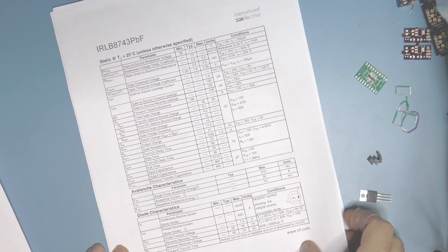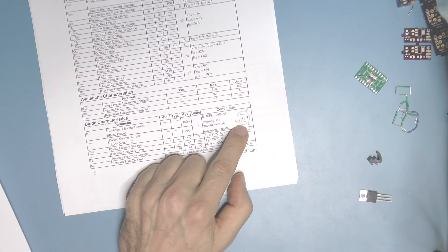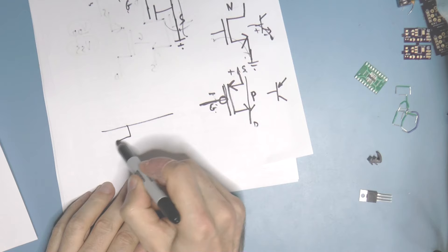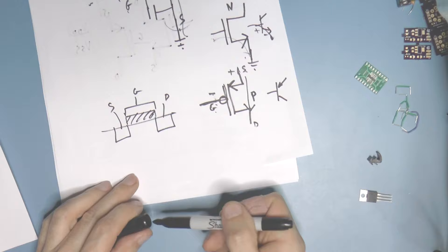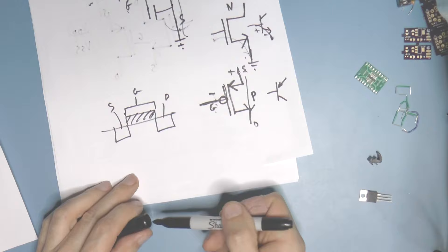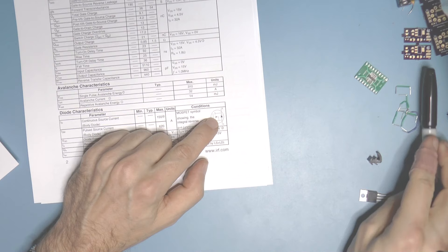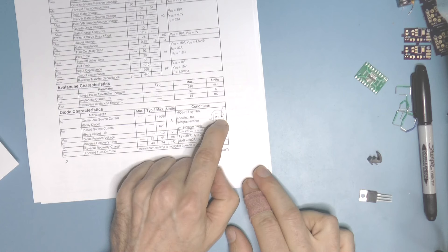One interesting thing I want to show is this symbol — a diode connected from source to drain. This basically indicates that even though the MOSFET looks symmetrical in its diagram — substrate, doped regions, insulator, gate contact — the current can only flow one way. The transistor will only prevent current from flowing one way. If you swap the terminals, current will just flow right through the diode. This is called the body diode. It's intrinsic to the device — it's actually there as part of the fundamental physics.